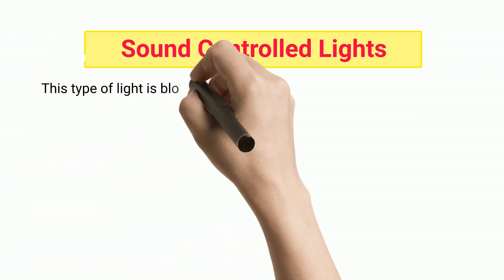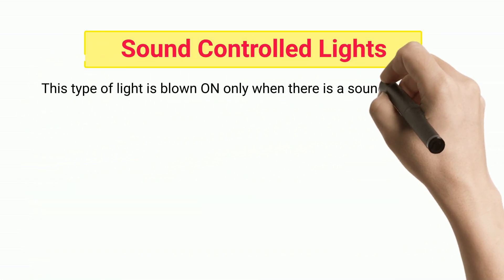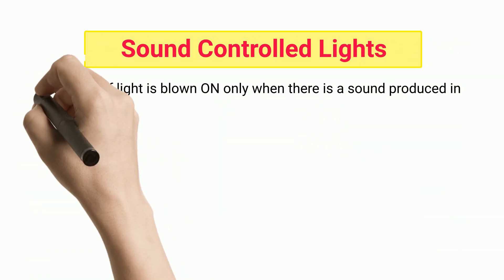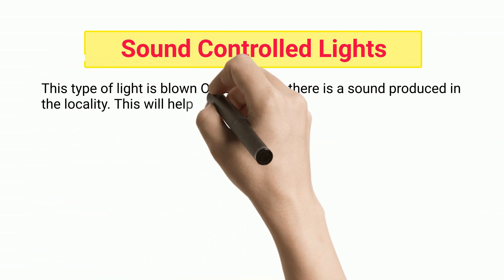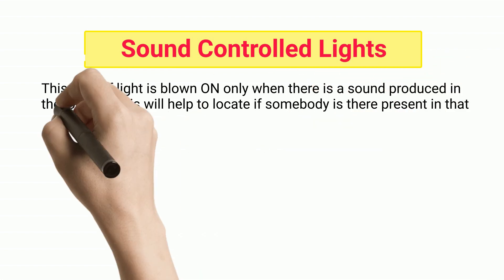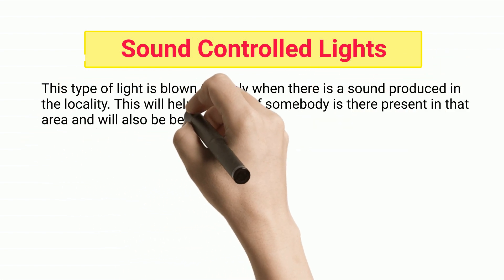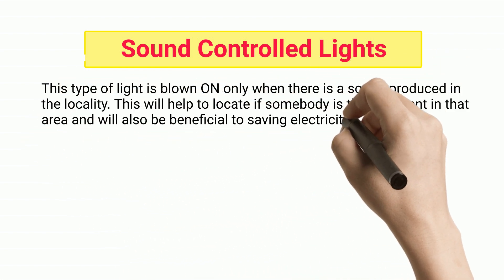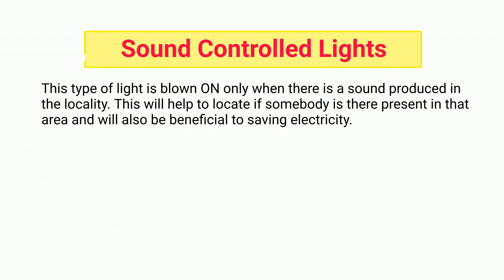Sound controlled lights. This type of light is turned on only when there is a sound produced in the locality. This will help to locate if somebody is present in that area and will also be beneficial to saving electricity.